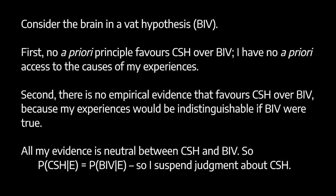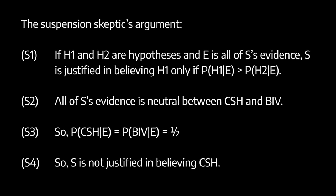We can put this more formally. Walker's argument for suspension skepticism goes: First, an underdetermination principle — if h1 and h2 are hypotheses and e is all of s's evidence, then s is justified in believing h1 only if the probability of h1 given e is greater than the probability of h2 given e. Second, all of s's evidence is neutral between the common sense hypothesis and the brain in the vat hypothesis. So the probability of the common sense hypothesis given e equals the probability of the brain in the vat hypothesis given e, which must equal one half — 50%. So we are not justified in believing the common sense hypothesis; we should suspend judgment.